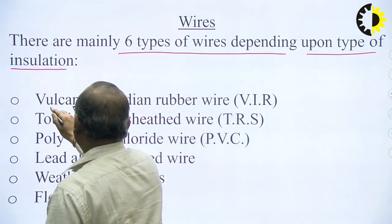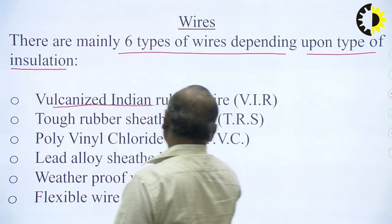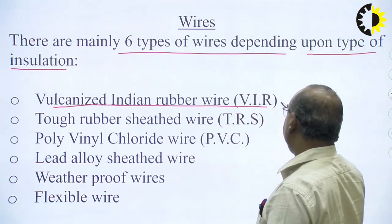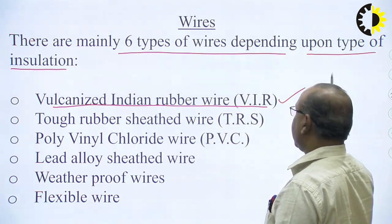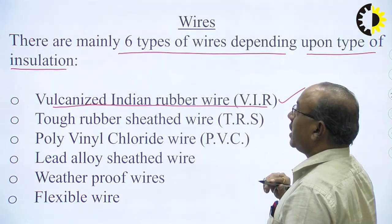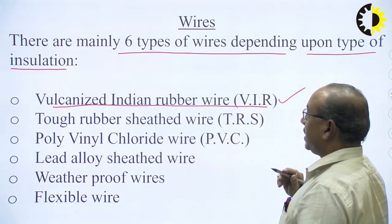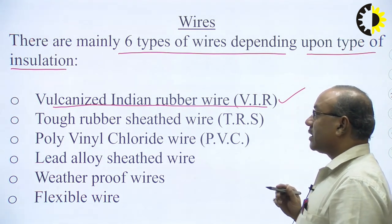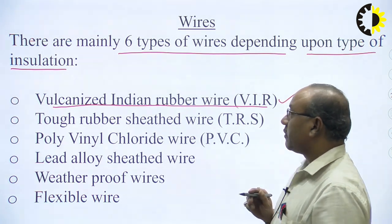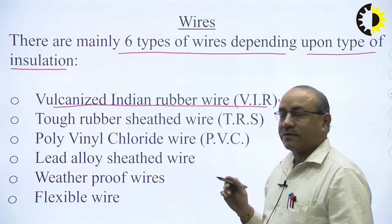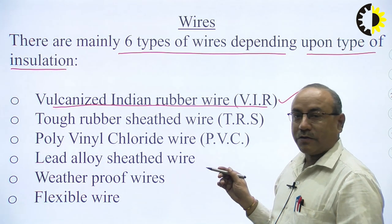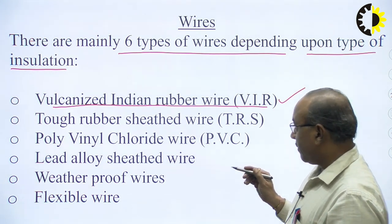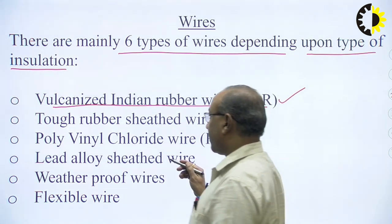The first type is Vulcanized Indian Rubber wire — in short, we call it VIR wire. Vulcanized Indian Rubber is the type of insulation which is put over the wire, and that is why the name given to it is VIR wire.